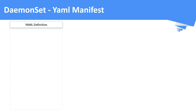A DaemonSet definition has four important top-level fields: apiVersion, kind, metadata, and spec. For a DaemonSet, the apiVersion should be apps/v1 and the kind should be DaemonSet, with D and S in uppercase.